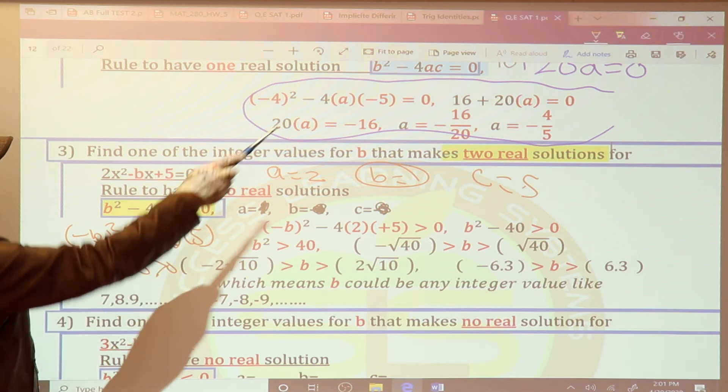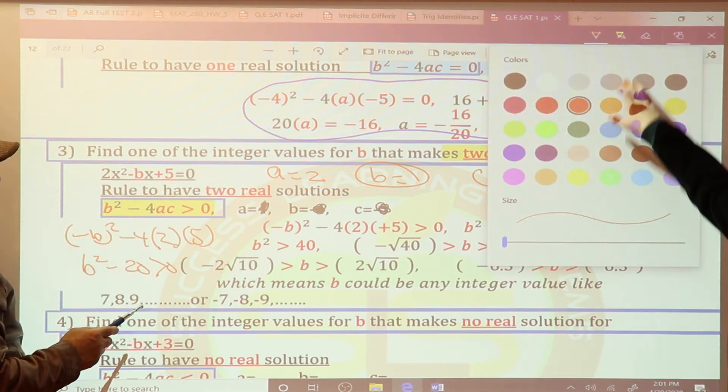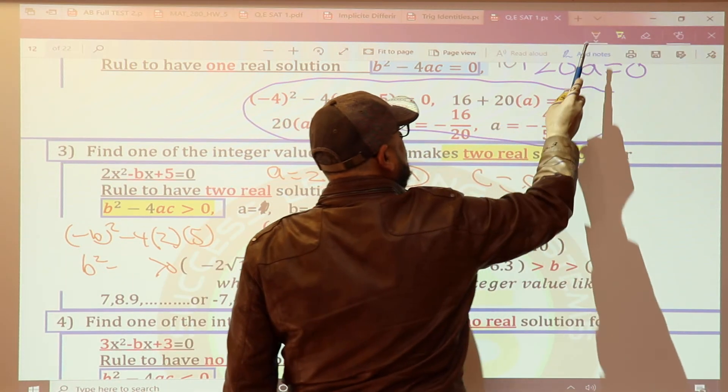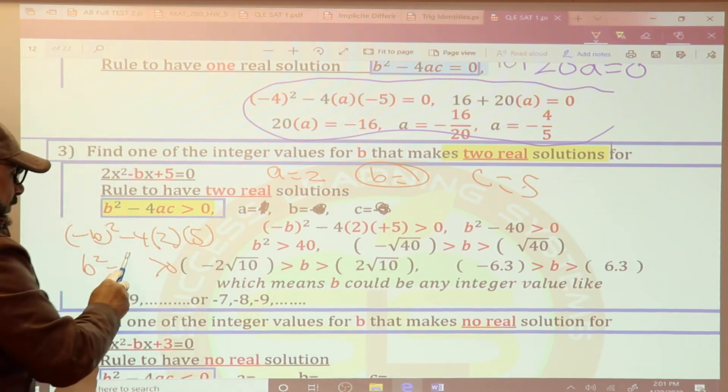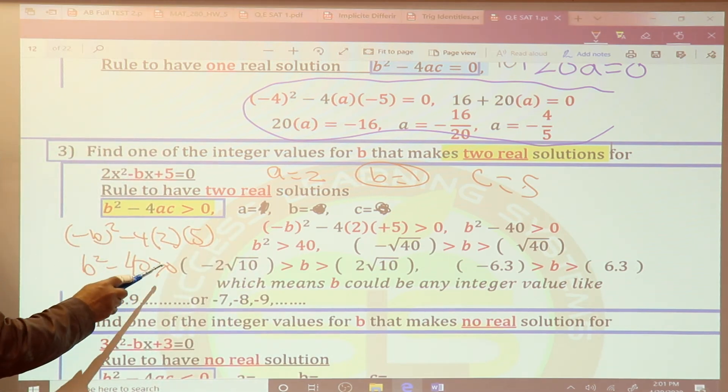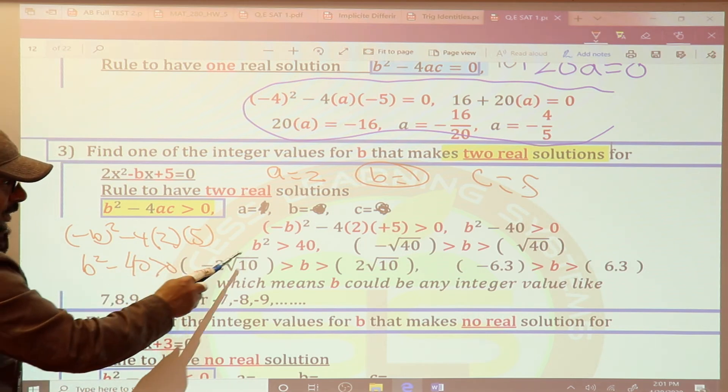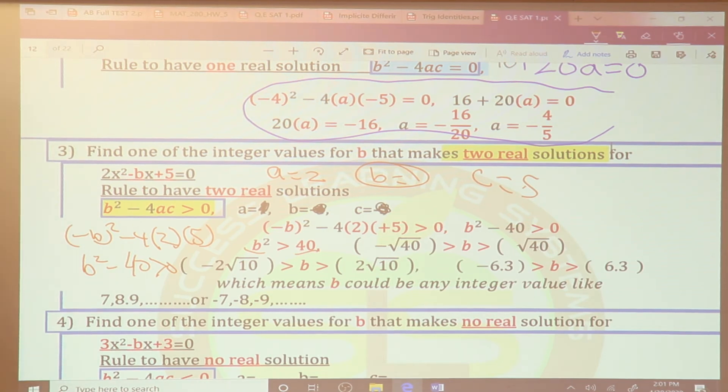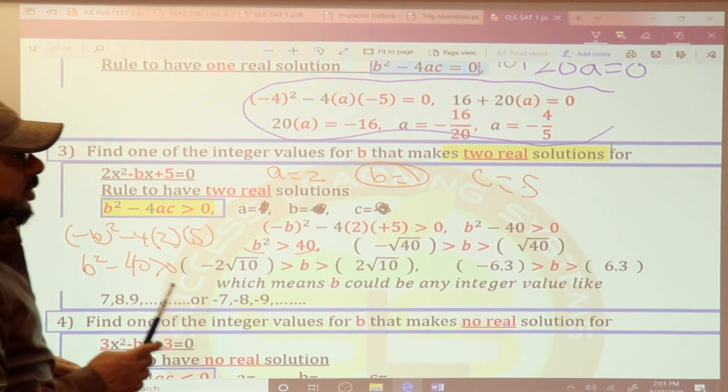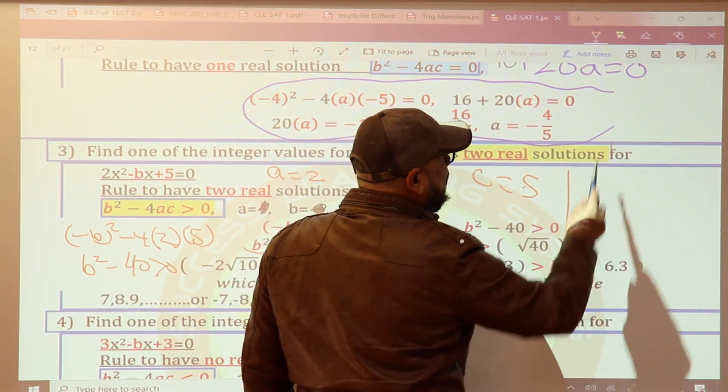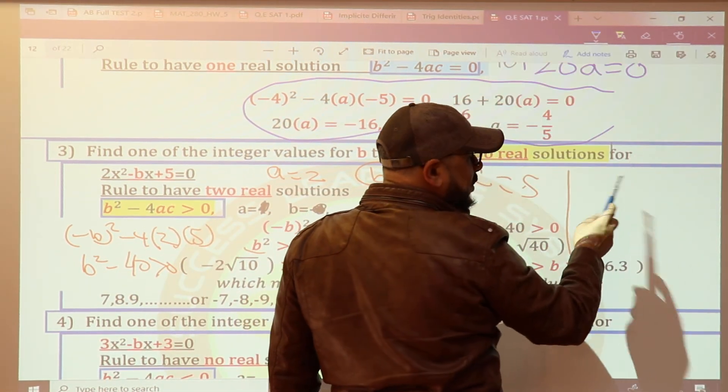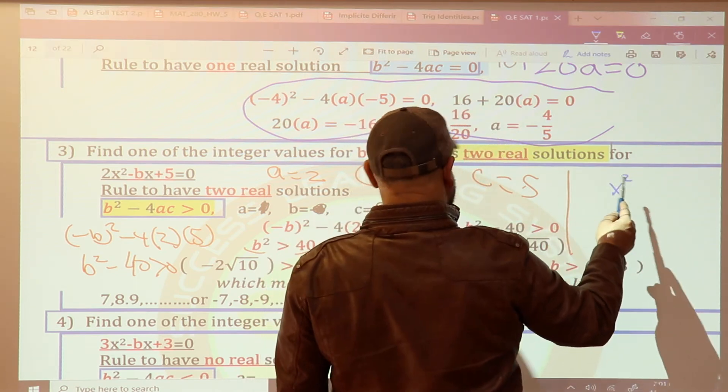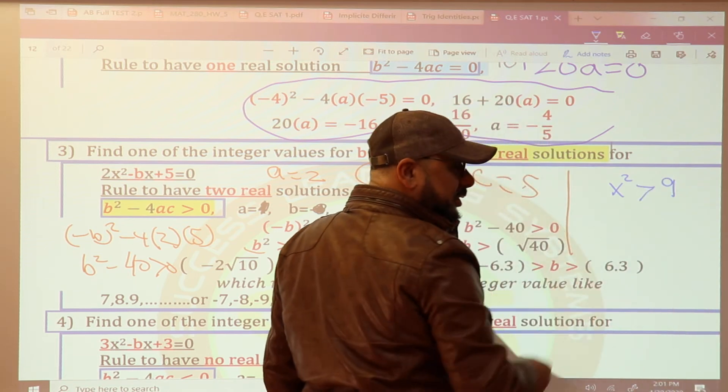B squared minus what? 40. Great, greater than 0, right? 4AC. 4AC, 4 times 2 times 5 is 40. Can I have an eraser? 4AC. This is what? 40, good? Then B squared minus 40 greater than 0. Then here you work. B squared greater than 40. Now how we solve inequality when we have square root? This is a new thing for your life. I want to give you: how we solve when x is squared greater than 9?